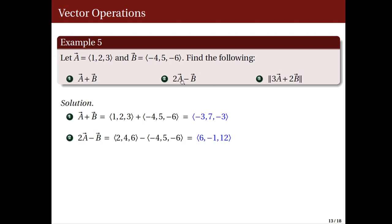Next, let us determine the vector 2a − b. First, we compute 2a: multiplying each component of a by 2 gives (2, 4, 6). Then subtracting b: 2 − (−4) = 6, 4 − 5 = −1, and 6 − (−6) = 12. Therefore, 2a − b = (6, −1, 12).